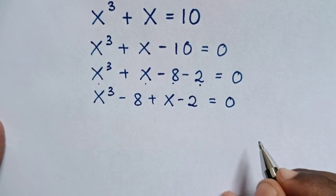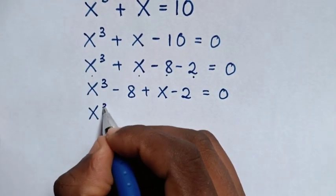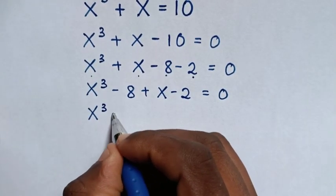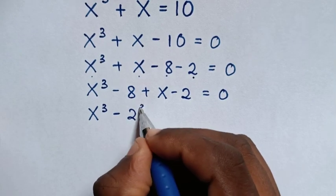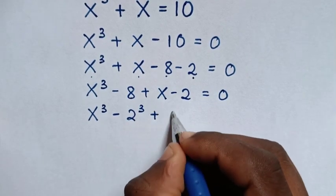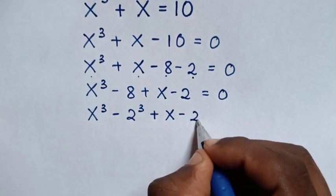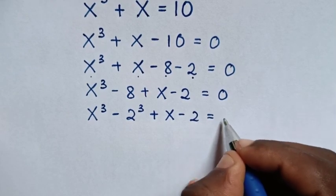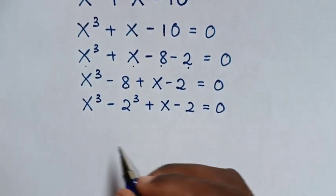Then in the next step, it will be x power 3 minus 8, which is the same as 2 power 3, then plus x minus 2 is equal to 0.